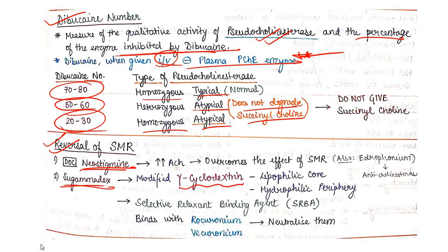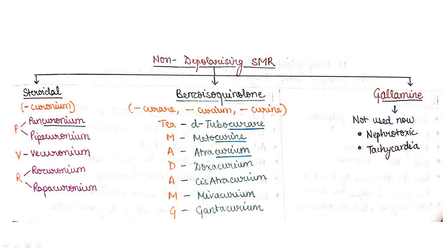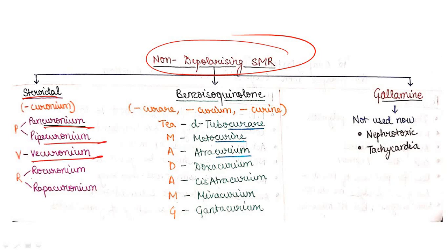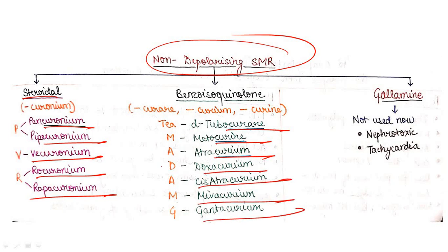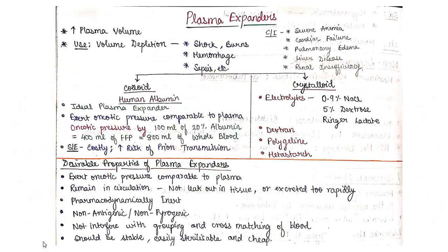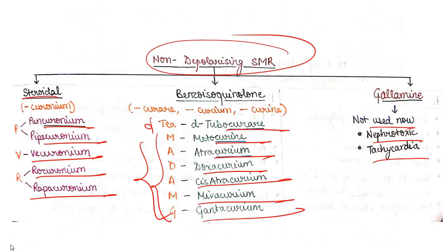Classification of non-depolarizing SMR: steroid group includes pancuronium, pipecuronium, vecuronium, rocuronium, and rapacuronium (mnemonic: PVR). Benzylisoquinoline group includes d-tubocurarine, metocurine, atracurium, doxacurium, cisatracurium, mivacurium, and gentacurium (mnemonic: T-MADAM-G). Gallamine is no longer used — it is nephrotoxic and causes tachycardia. That concludes the topic of skeletal muscle relaxants.